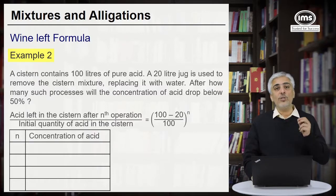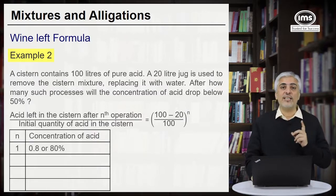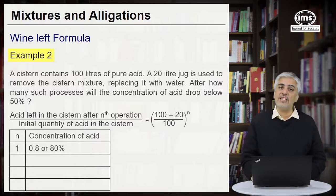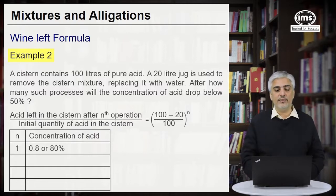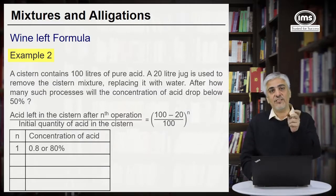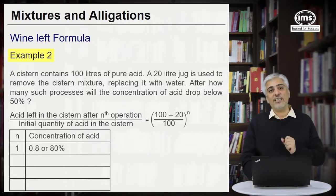So when I do the transaction one time, suppose if I did the transaction one time what will the concentration become? 80 percent. It was 100 percent. You multiplied it by 0.8 so it became 80 percent. Now second time when you do it whatever 80 percent acid is left it will become 80 percent of that again.